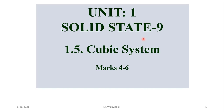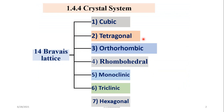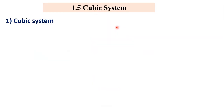Hello everyone. Welcome back to this lecture series on solid state. In the last video, we studied that there are 14 different ways by which points can be arranged in three-dimensional order, giving 14 Bravais lattices. These 14 Bravais lattices are divided into seven crystal systems: cubic, tetragonal, orthorhombic, rhombohedral, monoclinic, triclinic, and hexagonal. Today in this lecture, we will study about the cubic system.